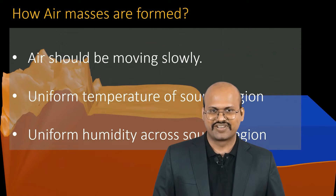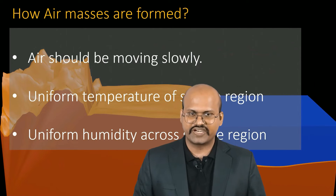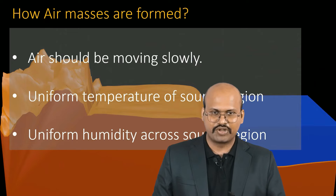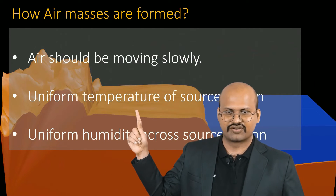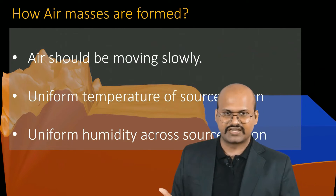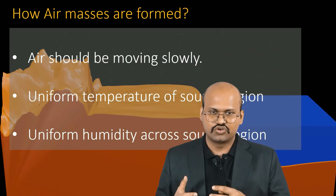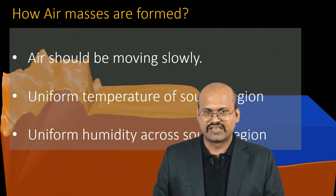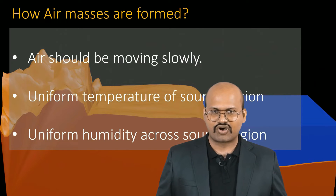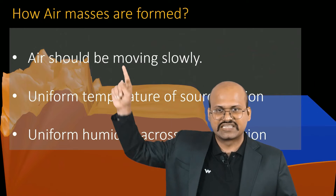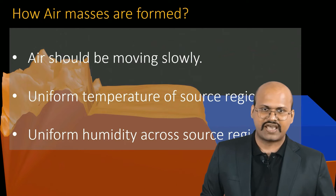For formation of an air mass, three conditions are essential. First, the air should be moving very slowly, because if it is moving fast it will not have time to acquire the properties of the source region. Second, the source region should have uniform temperature. Third, the source region should have uniform humidity. If there is rain in one part of the source region and it is dry in another, the air column in those areas will not have similar properties and will not form a continuous air mass.